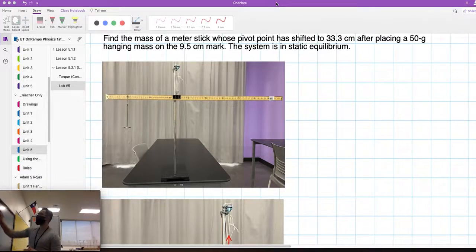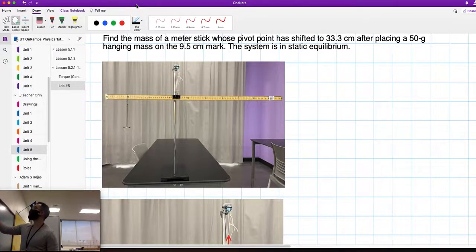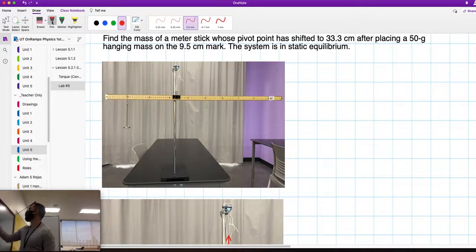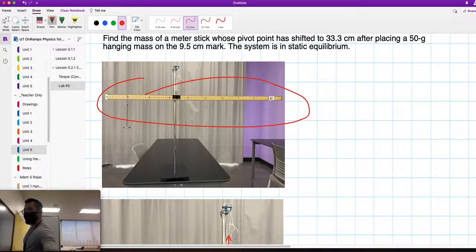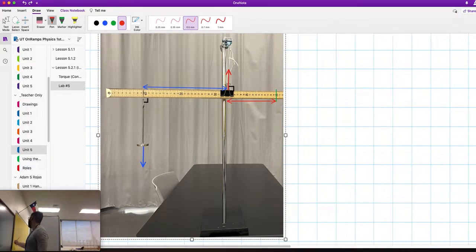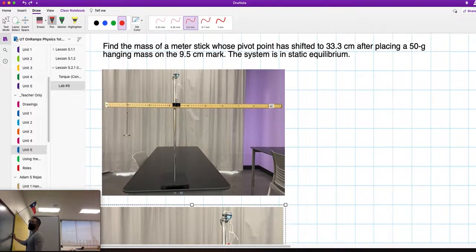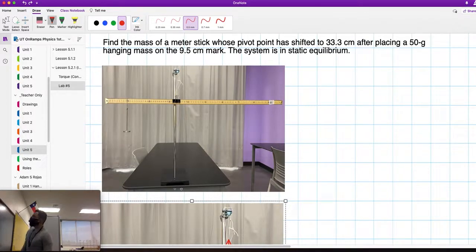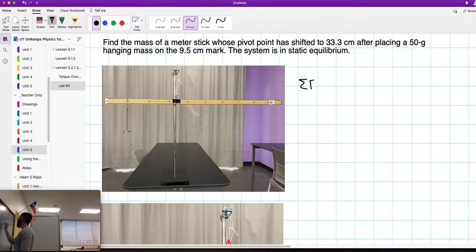We have the picture over here showing the meter stick in static equilibrium. That means we're going to have to use both conditions that we learned for static equilibrium. If the system is in static equilibrium, then the summation of the forces will be zero and the summation of the torques will be zero.